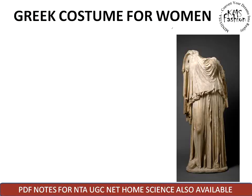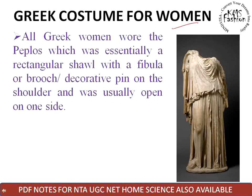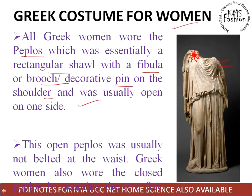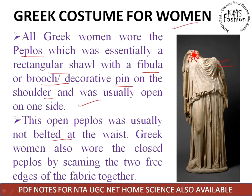For Greek women's costumes — all Greek women wore the Peplos, which was essentially a rectangular shawl with a fibula or brooch decoration pin on the shoulder. If you have seen any Greek play, you would have seen a decorative brooch or pin used on the shoulder, with the other side left open. The open Peplos was usually not belted. Greek women also wore the closed Peplos by joining the two free edges of the fabric together and wrapping all the folds upward — that is the women's costume, the Peplos.